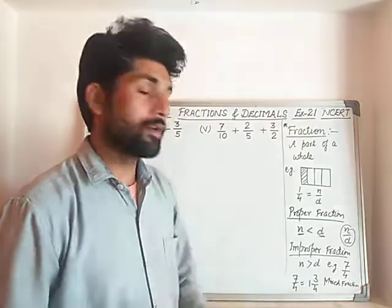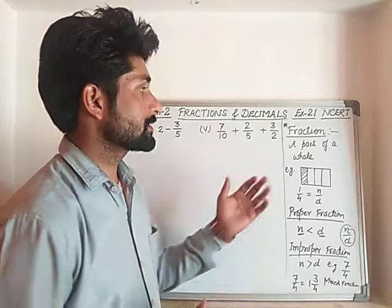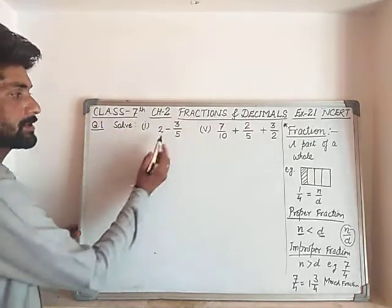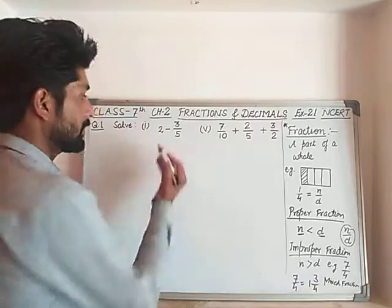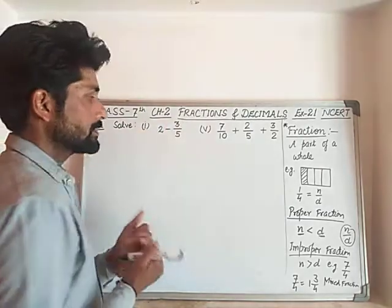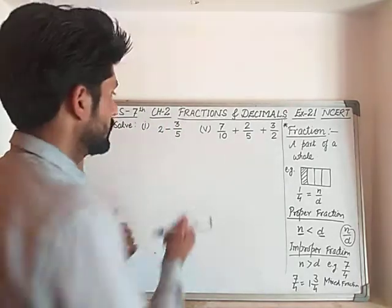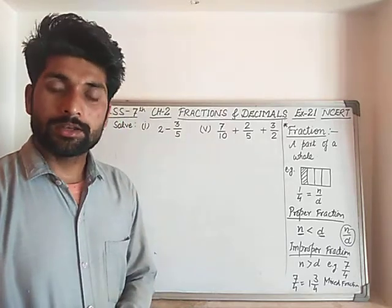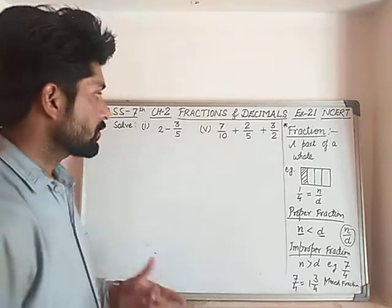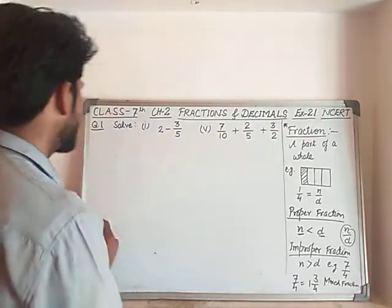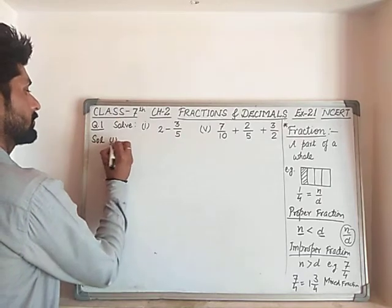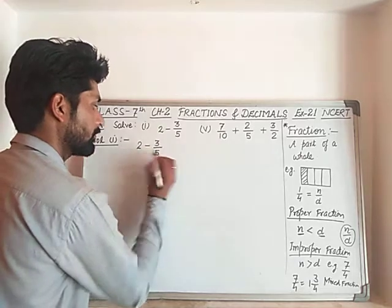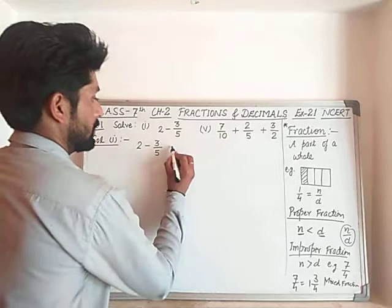Now we will discuss the questions given in Exercise 2.1. The first question has seven parts; we will solve the first part and the fifth part. The first part is: 2 minus 3 upon 5. Here 2 is a whole number but we can write it in the form n upon d.